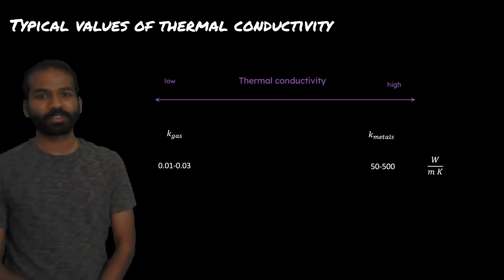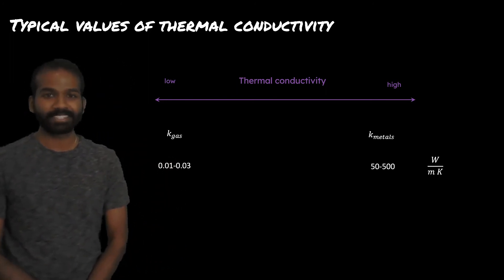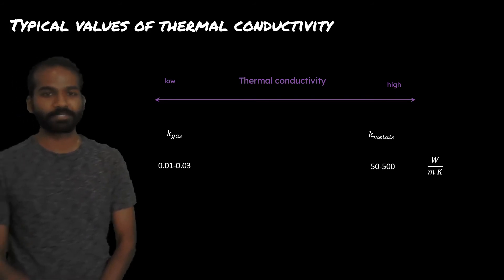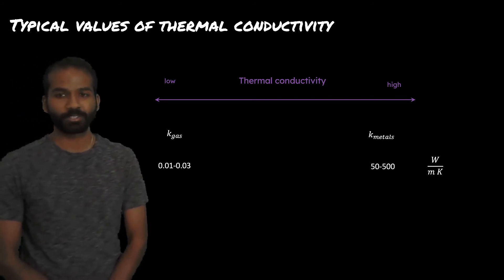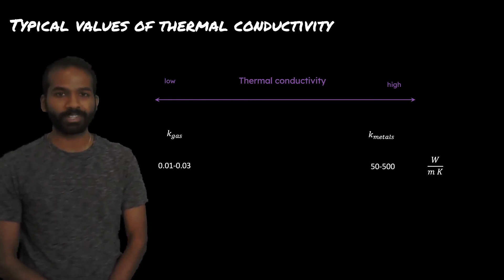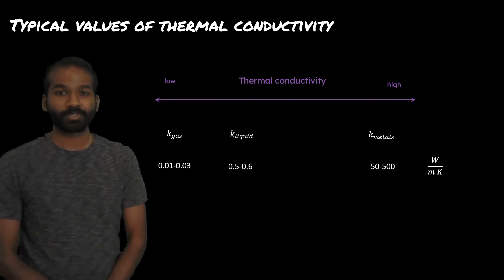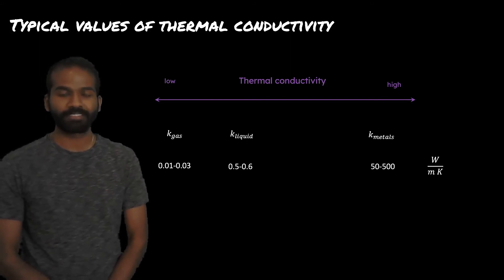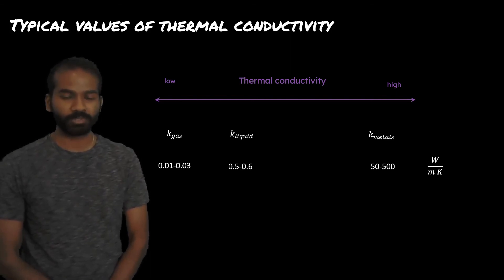On the far left-hand side, we have gases. Gases typically have a thermal conductivity of 0.01 to 0.03 watts per meter per kelvin. Thermal conductivity is low because the collisions of molecules in a gas are rare, which acts to limit the rate of heat transfer. Liquids have somewhat higher thermal conductivity of 0.5 to 0.6. Now that the molecules are in a condensed phase, these collisions occur much more frequently, which enables faster rates of heat transfer.